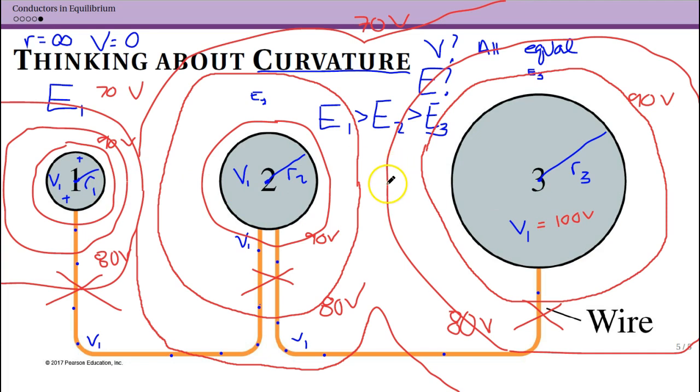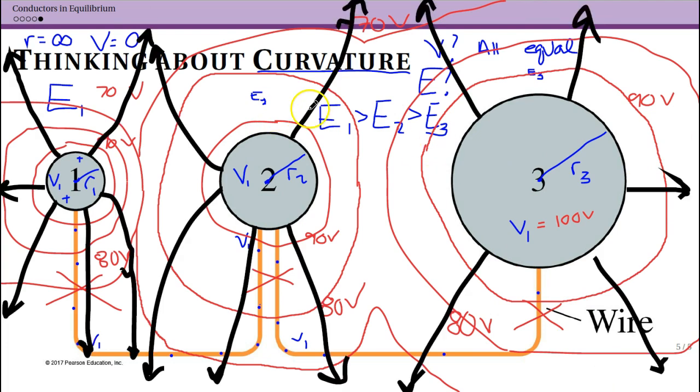Now note that your field lines would actually be starting on all of these and heading out towards infinity since all of these are positive. You don't start with field lines on one and put them on the other. Our field lines are just heading away from all of these. So briefly, I've tried to draw some field lines. It's challenging to do this.